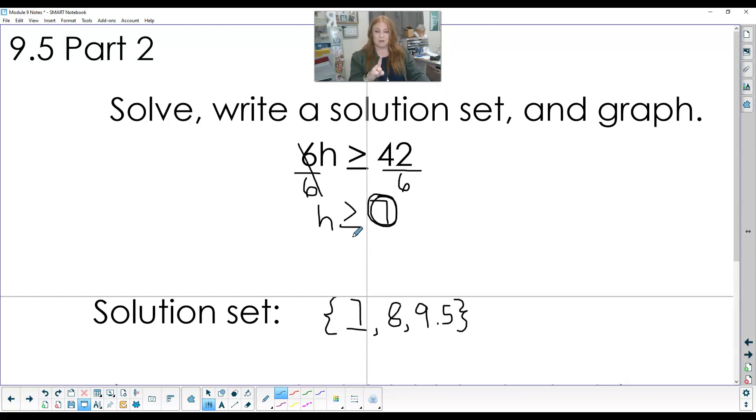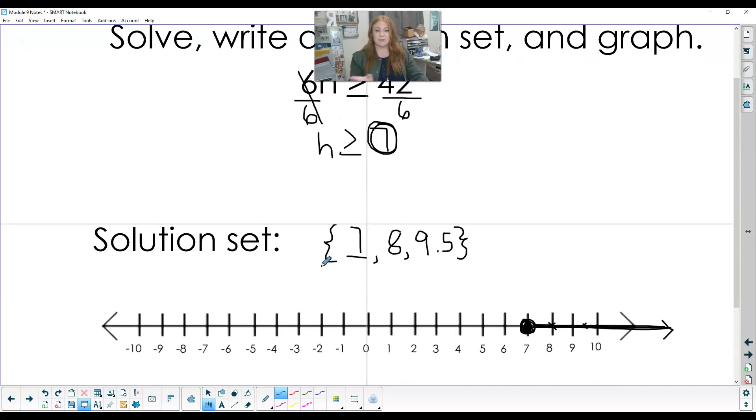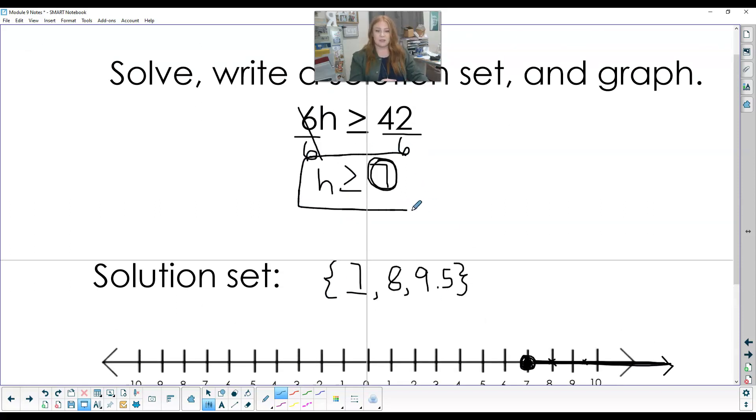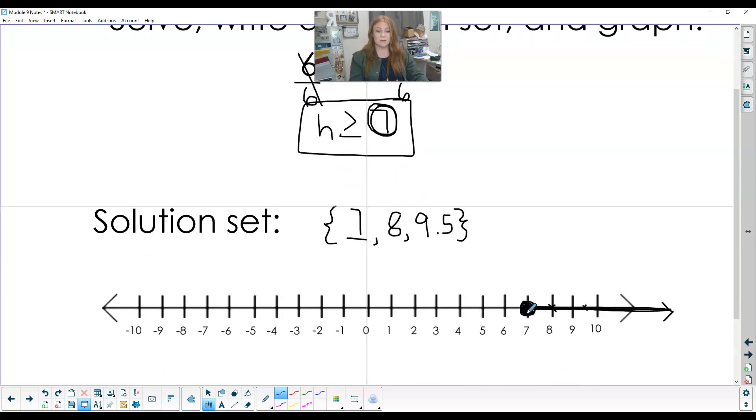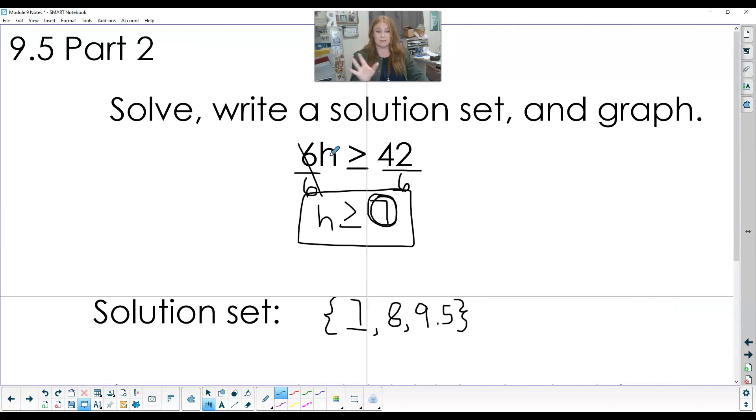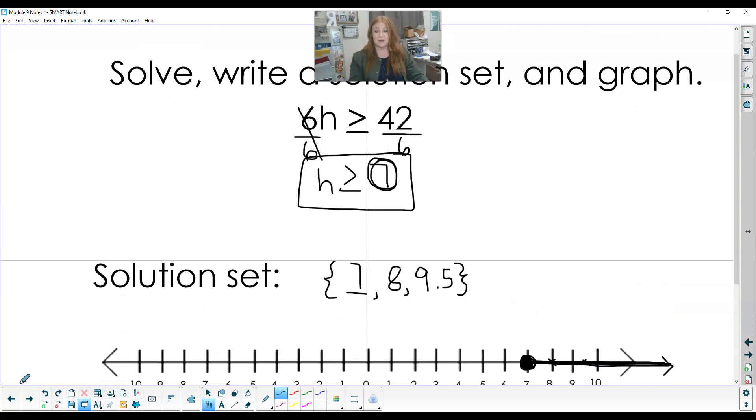So solve it. Bring your symbol down. Write your solution set. Come back to your problem. I said H is greater than or equal to 7. That's where my circle goes. It was included because my garage door is down. I shut it. I cannot see into that garage. I mark my solution set answers, and then make my arrow connect on those numbers. So go ahead and make sure you have all of that down and give those a try.